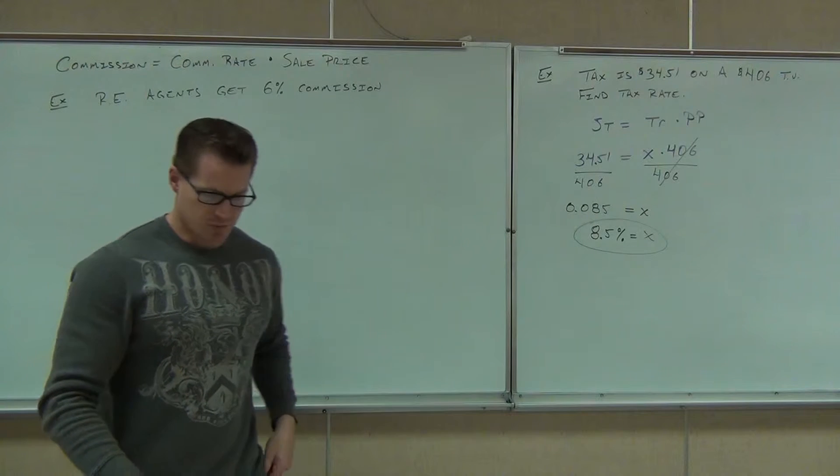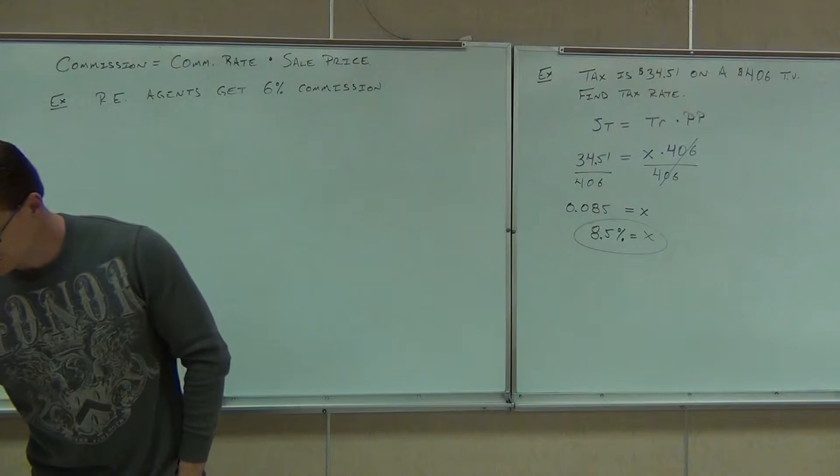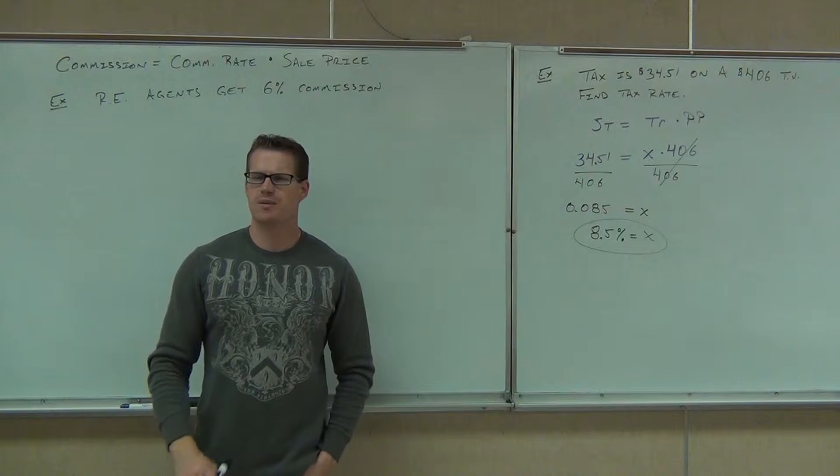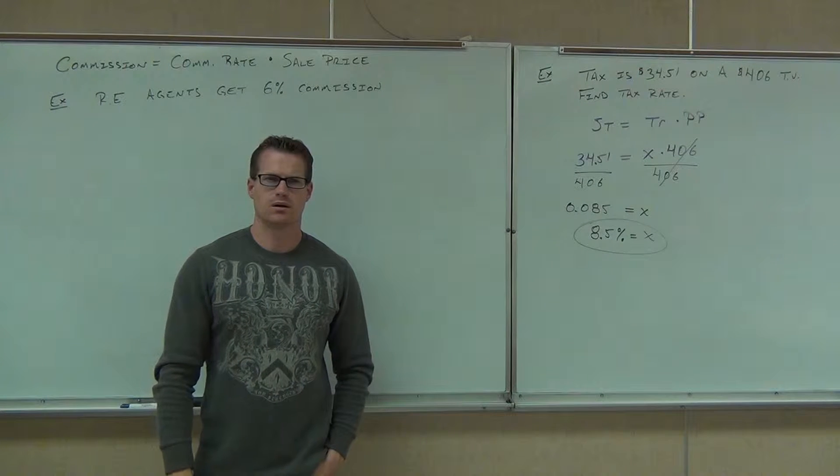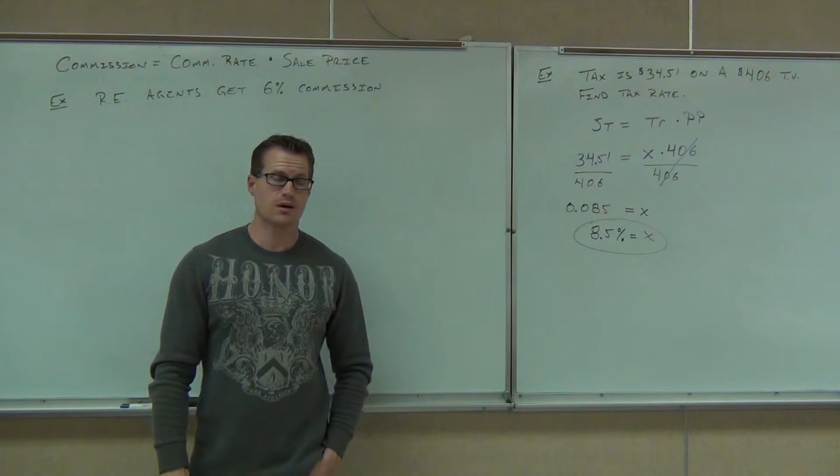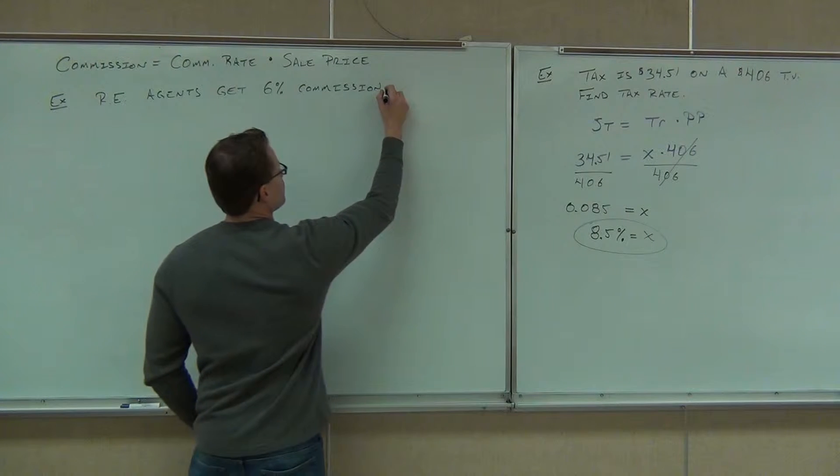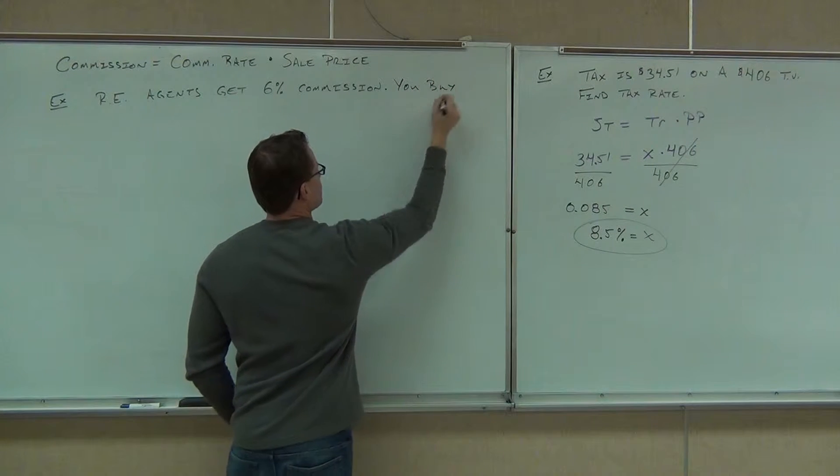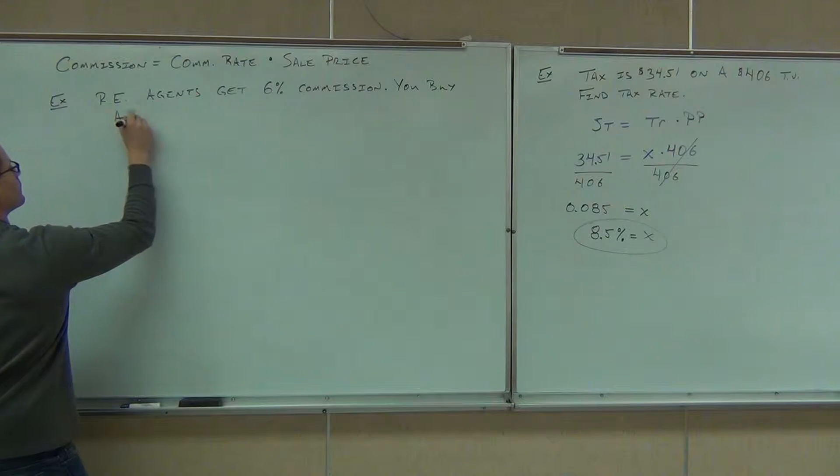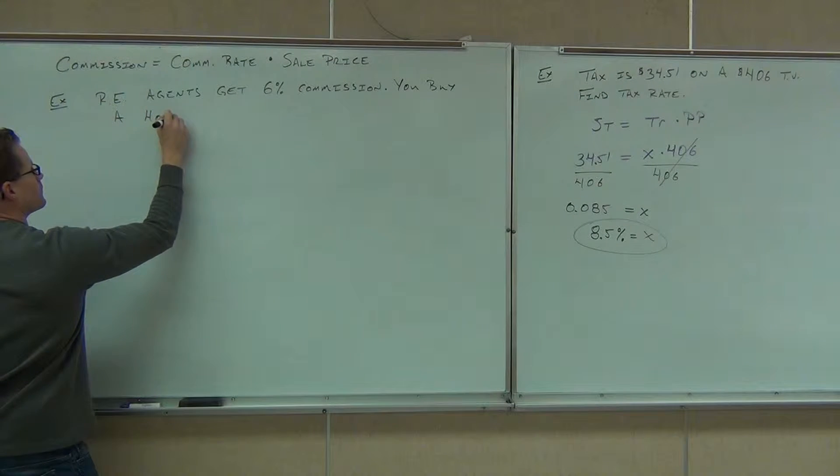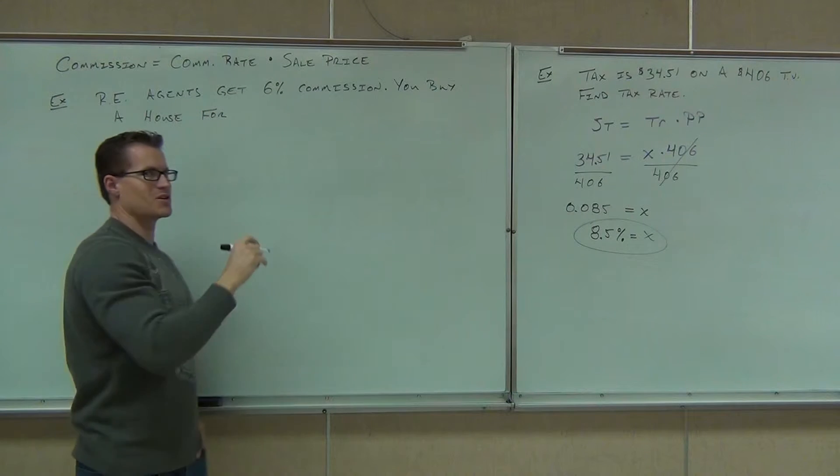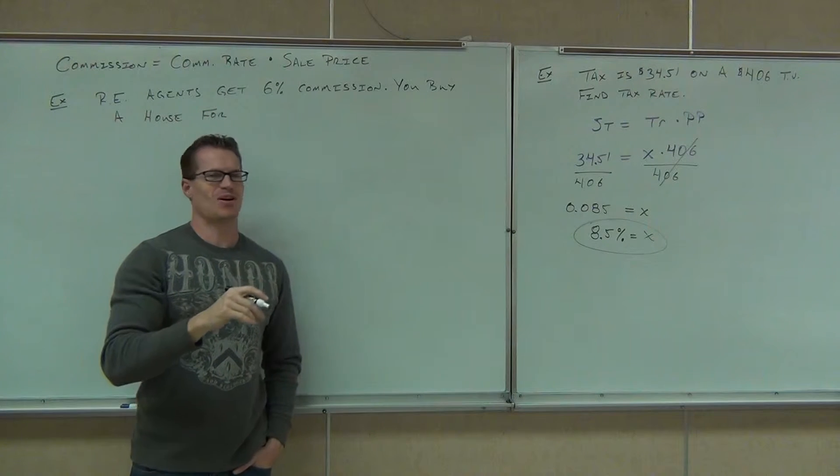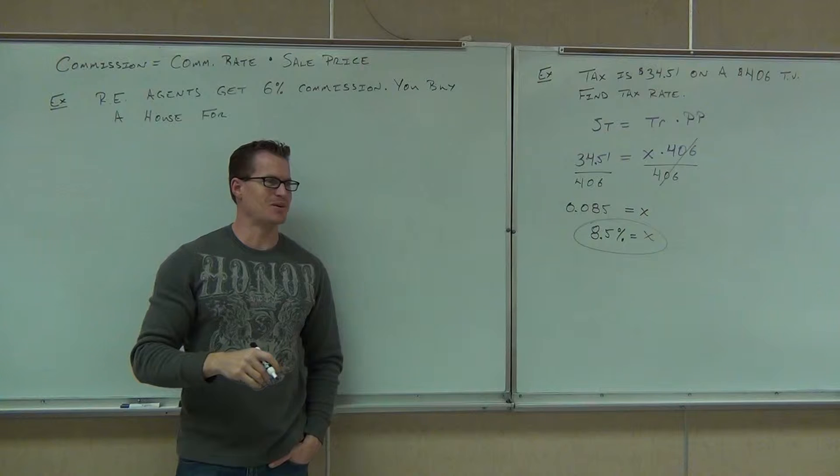Real estate agents get 6% commission. So let's say we're going to buy, how much do you want to buy a house for? $165,000. I'm assuming you mean $165,000, right? That'd be awesome if you buy it for $165. I'd have so many homes.